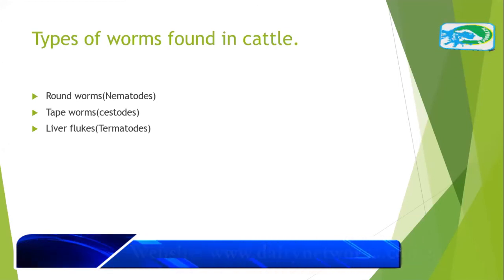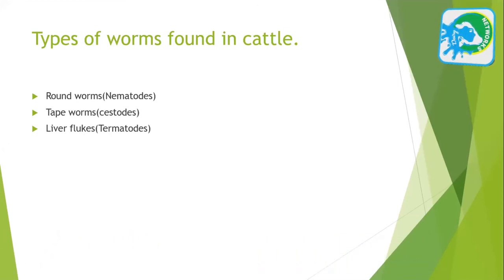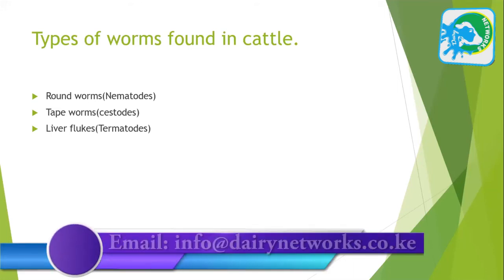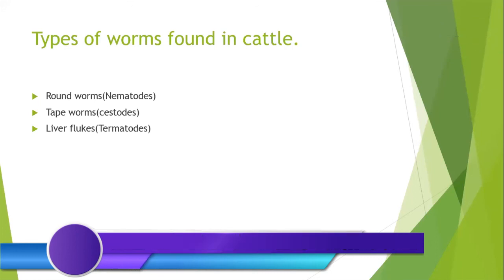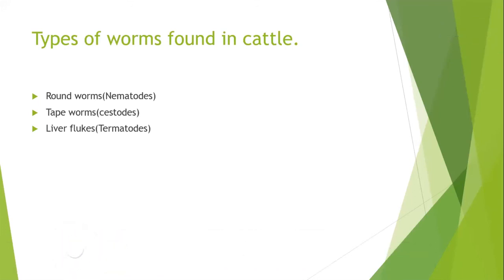The tapeworms will majorly be found in parts of the small and large intestines — that is where they primarily inhabit. These are produced differently, which I will explain. The final type of parasite we find are the liver flukes, and I am going to delve deeper into the issue of liver flukes in cattle.